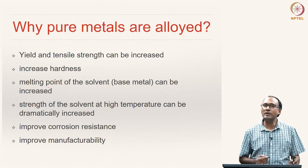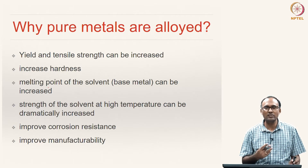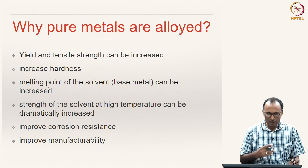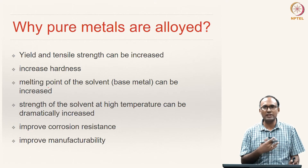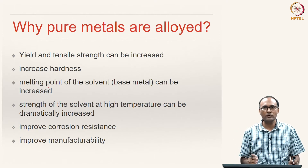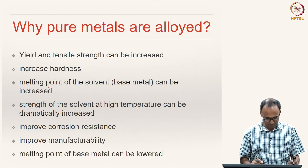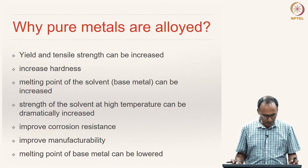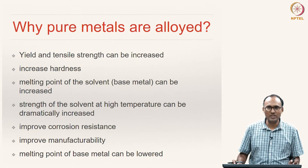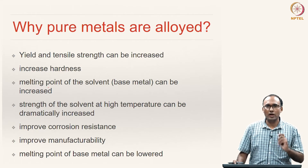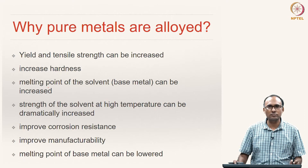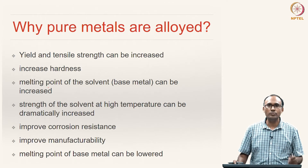Alloying also enhances or improves manufacturability. Certain pure metals cannot be manufactured readily, and hence in order to enhance their manufacturability we usually do some alloying so that the solvent's manufacturability is enhanced by alloying it with a little bit of a foreign element. We can also sometimes reduce the melting point of the base metal by alloying. These are all the different advantages one would get by alloying, and hence alloys are more prevalent in daily life than pure metals in their pure form.